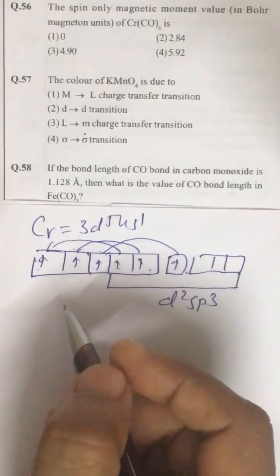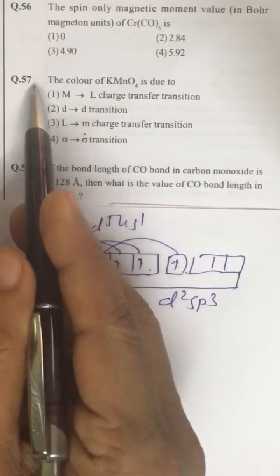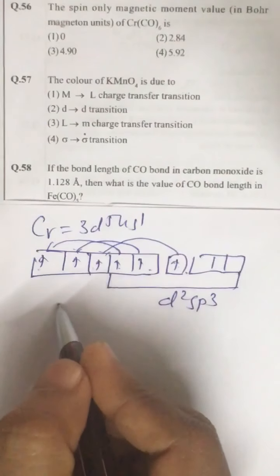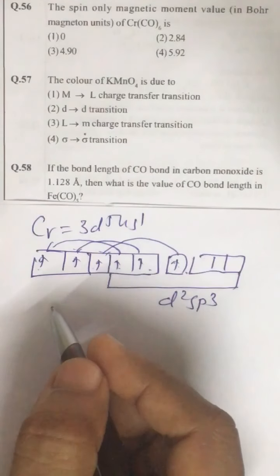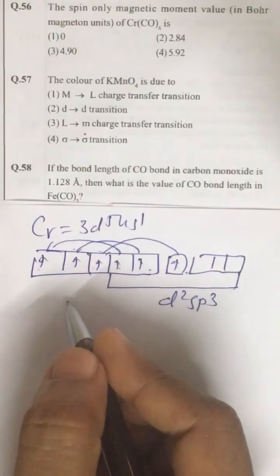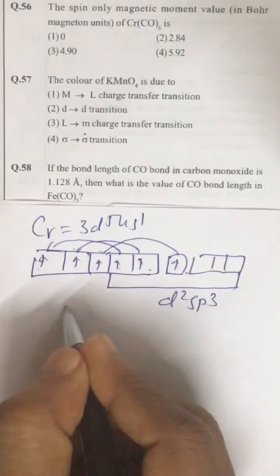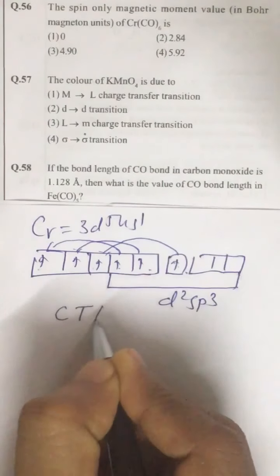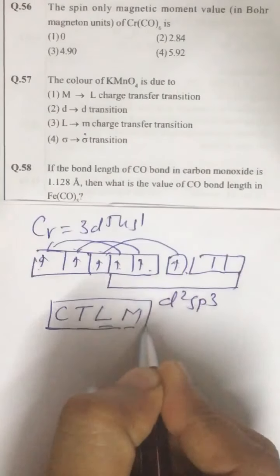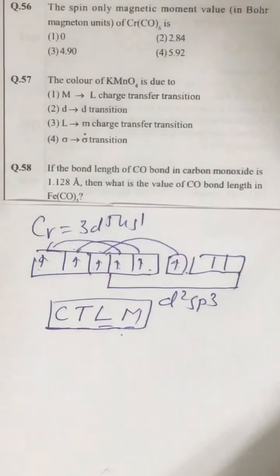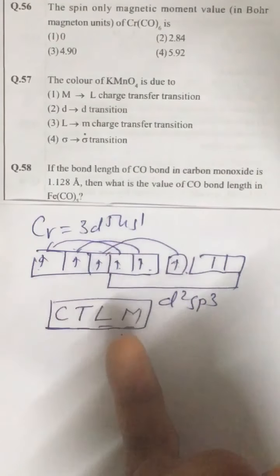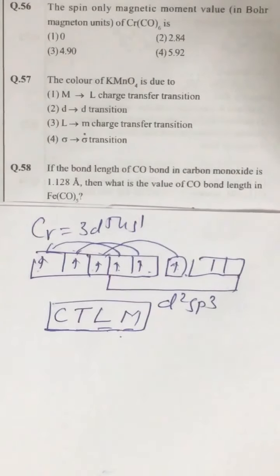Look at 57. The coloration of KMnO4 or K2Cr2O7 or any other compound having very dark color is due to charge transfer from ligand to metal. CTLM. So this you must remember. It is due to charge transfer from ligand to metal. Correct answer is third option.